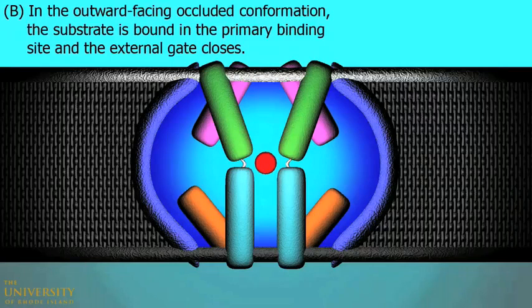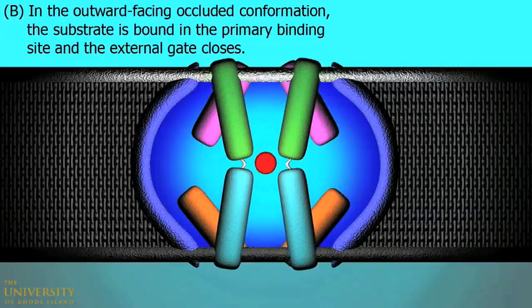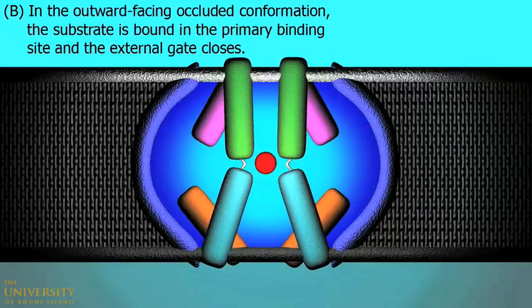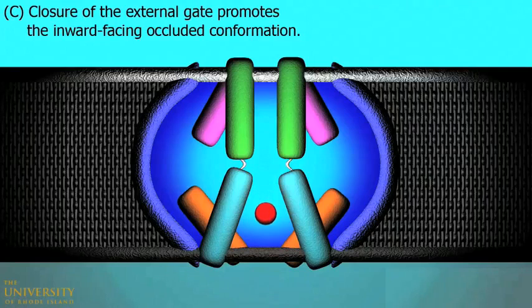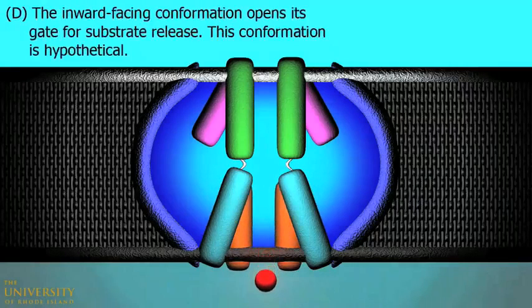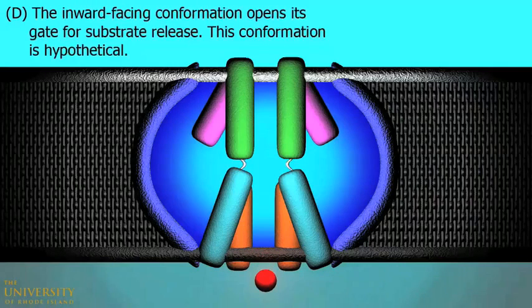In stage B, or the outward-facing occluded conformation, the substrate is bound to the primary binding site and the external gate closes. In stage C, closure of the external gate promotes the inward-facing occluded conformation, and in stage D, the inward-facing conformation opens its gate for substrate release. This conformation is hypothetical.